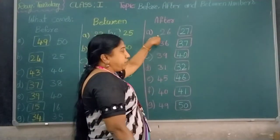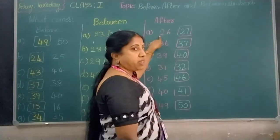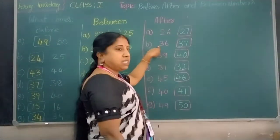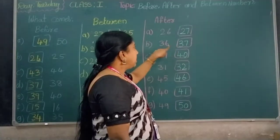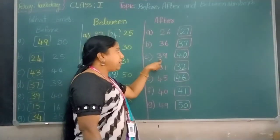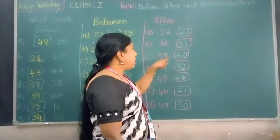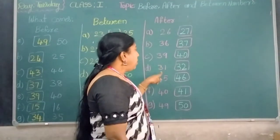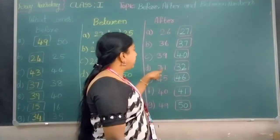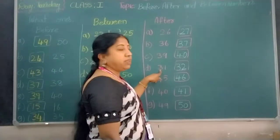What comes after 26? Number 27 comes after 26. What comes after 36? Number 37 comes after 36. What comes after 39? Number 40 comes after 39. What comes after 31? Number 32 comes after 31.